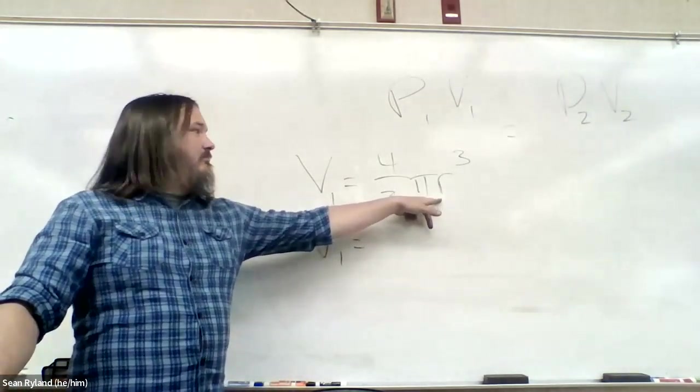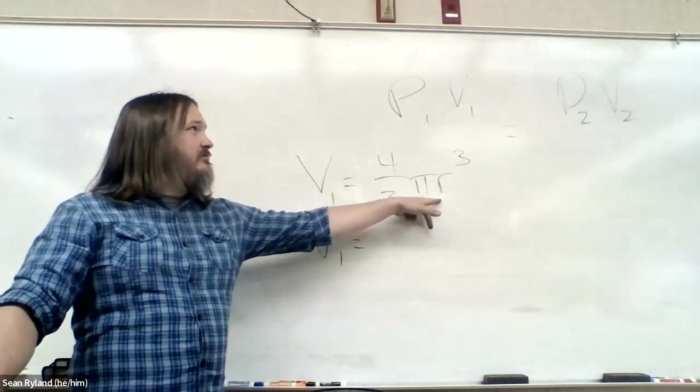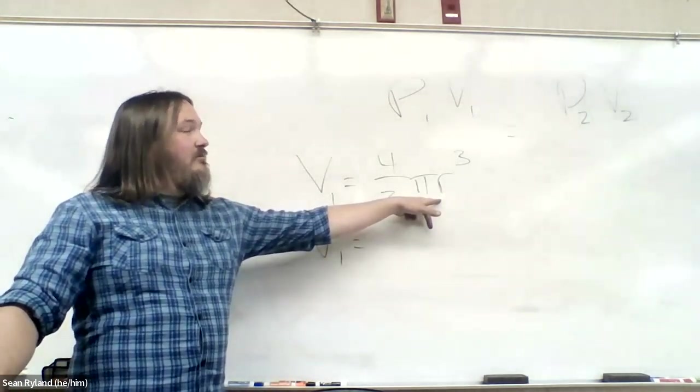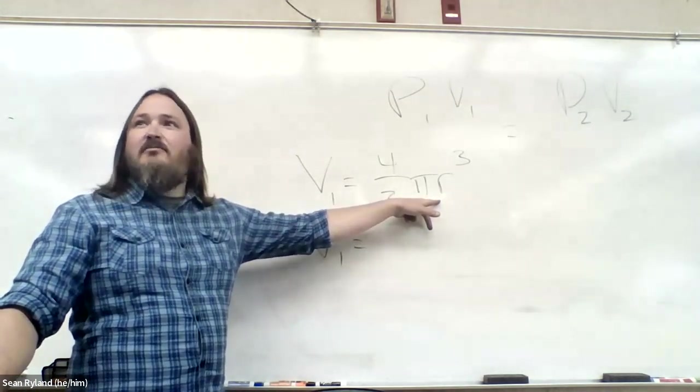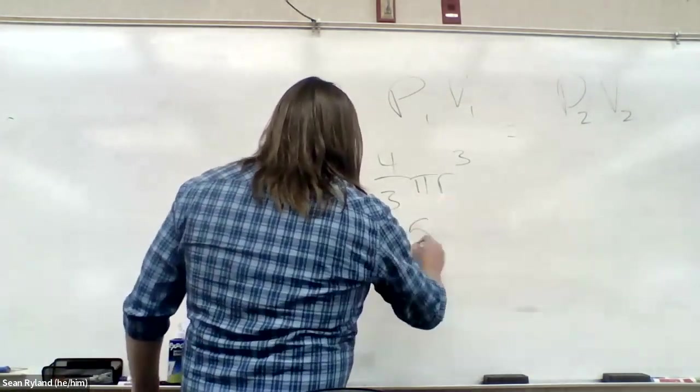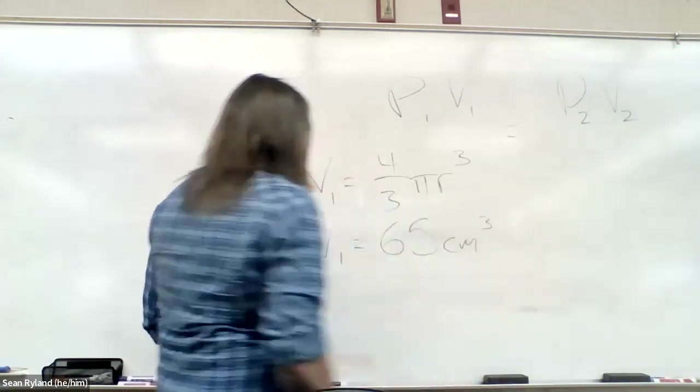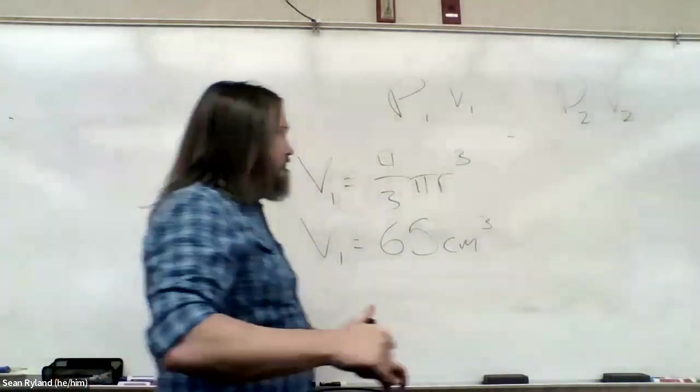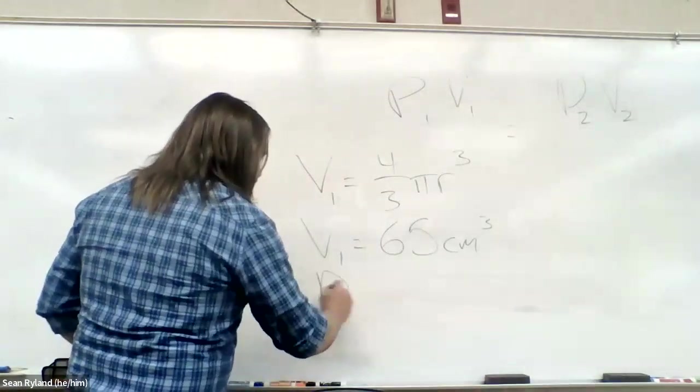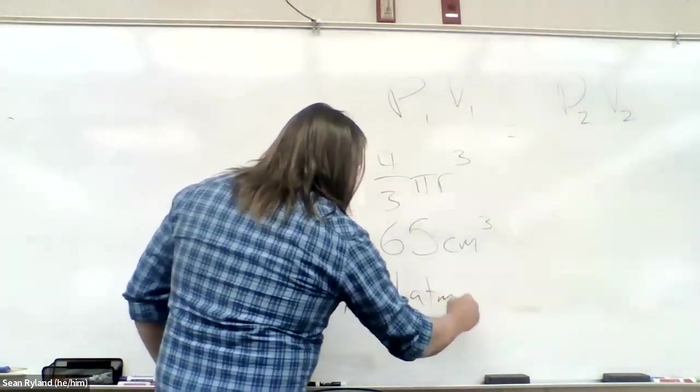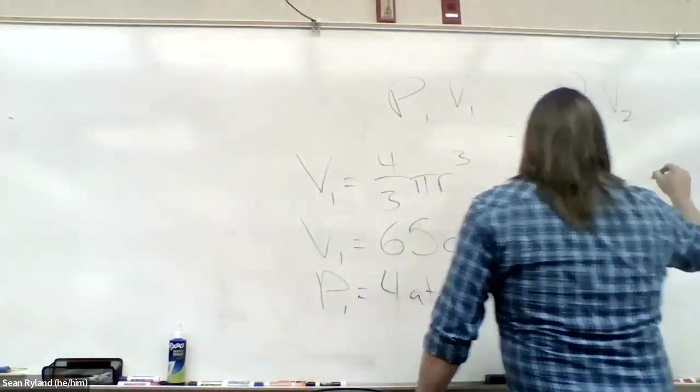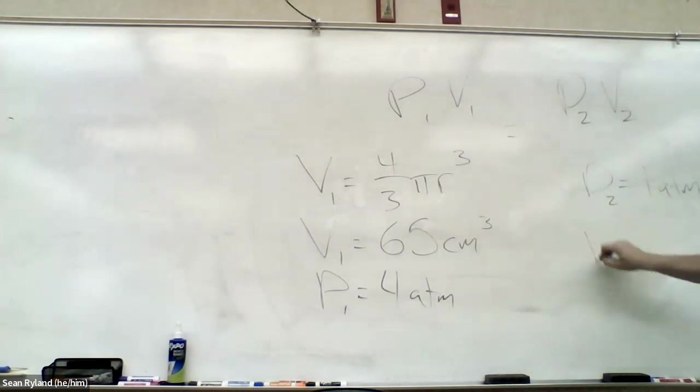Pi is close to 3. Those can get close to canceling out. 2.5 cubed is going to be something between 8 and probably, let's see, it's going to be about probably 18 times 4. So maybe not 48, maybe closer to 60, 65. P1 is 4 atmospheres. P2 is 1 atmosphere. So volume should increase by a factor of 4. We drop the pressure by a factor of 4, so the volume should increase by a factor of 4.